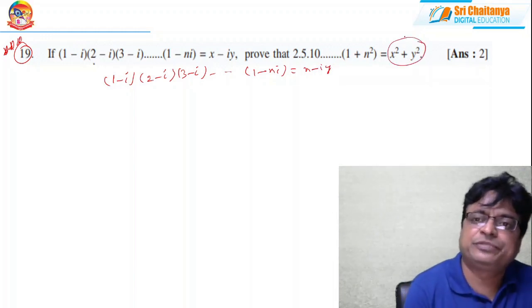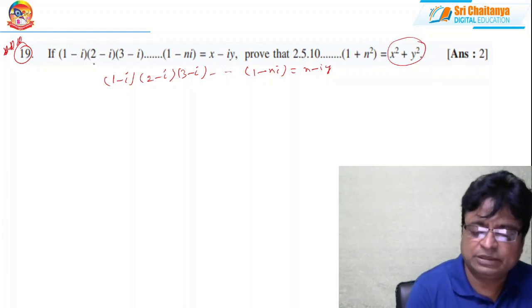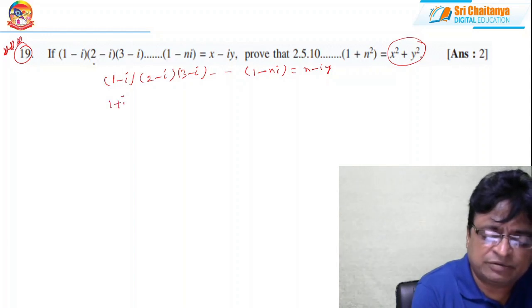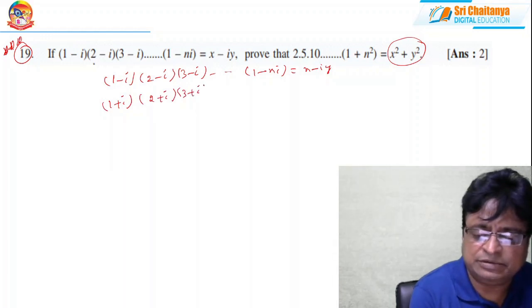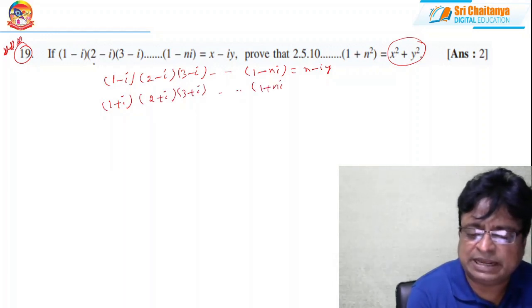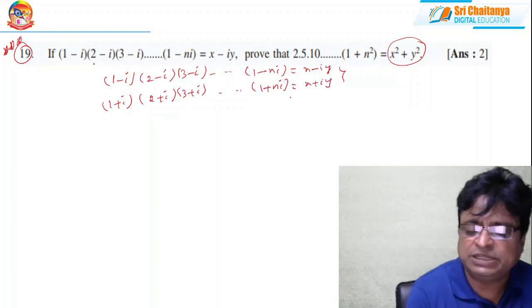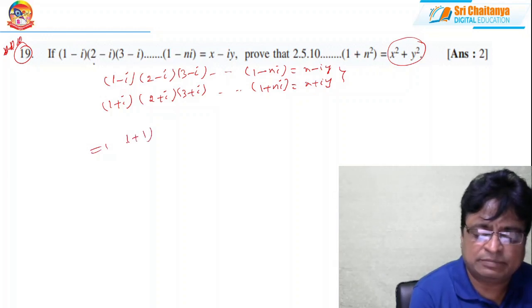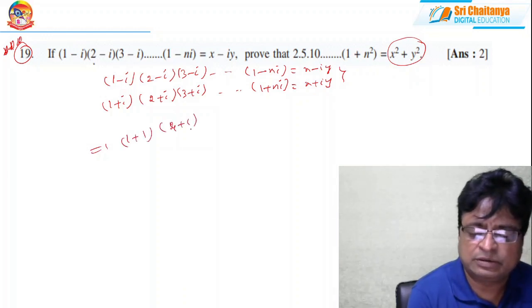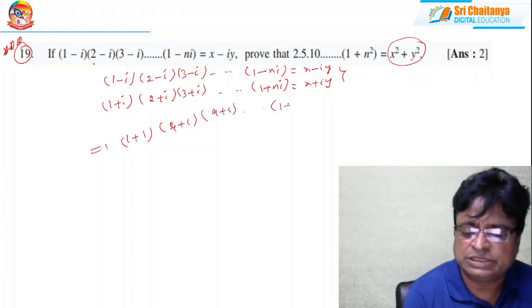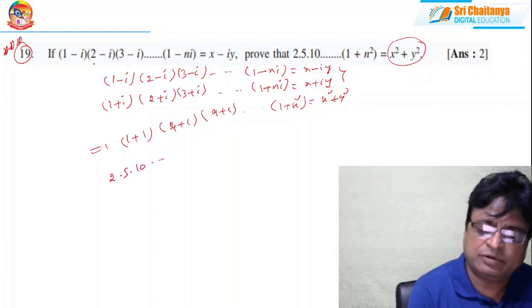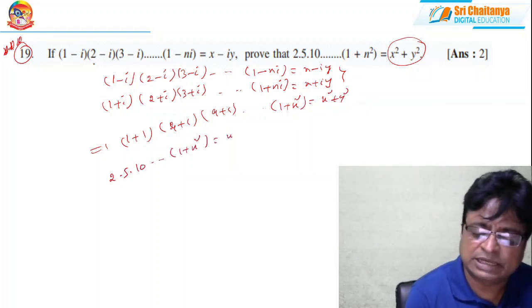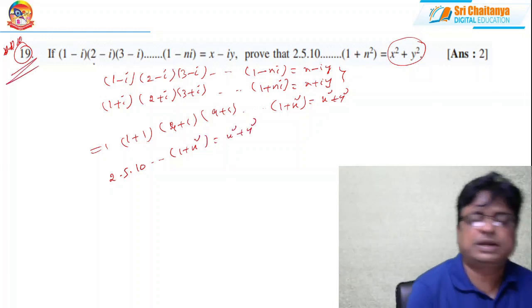Multiply both sides by the conjugate: (1 + i)(2 + i)(3 + i)···(1 + ni) = x + iy. Multiplying gives (1+1)(4+1)(9+1)···(1+n²) = x² + y². So the answer is 2 × 5 × 10 × ··· × (1 + n²) = x² + y². This is a very important and easy problem — we just multiplied by the corresponding conjugate.